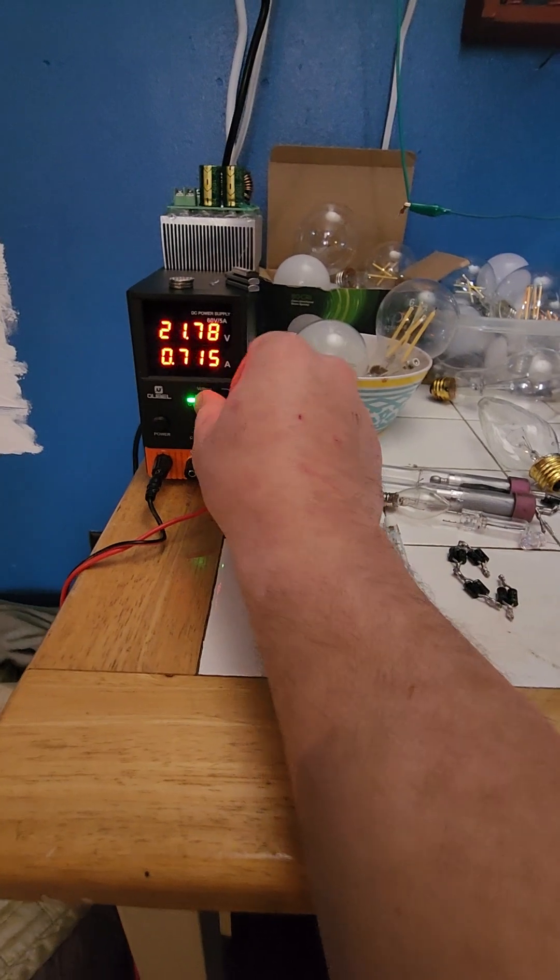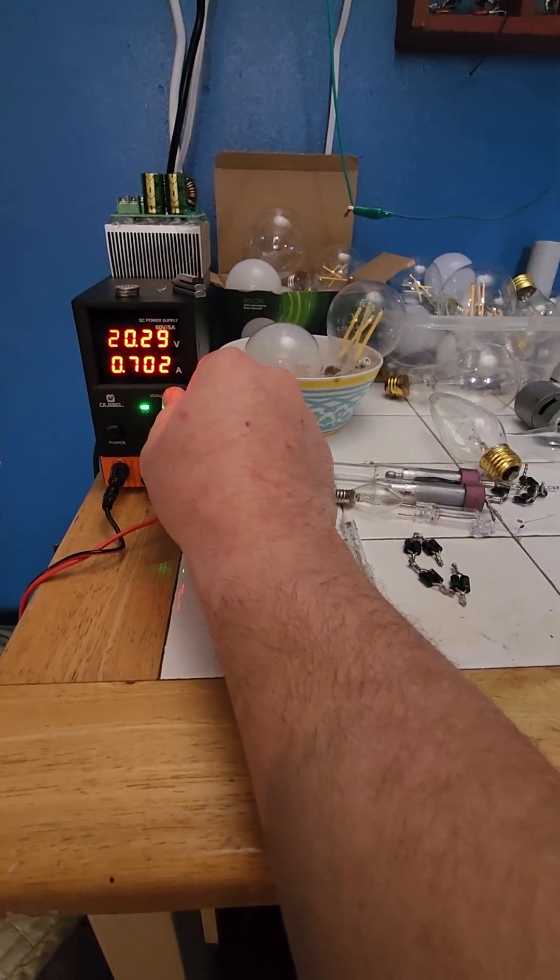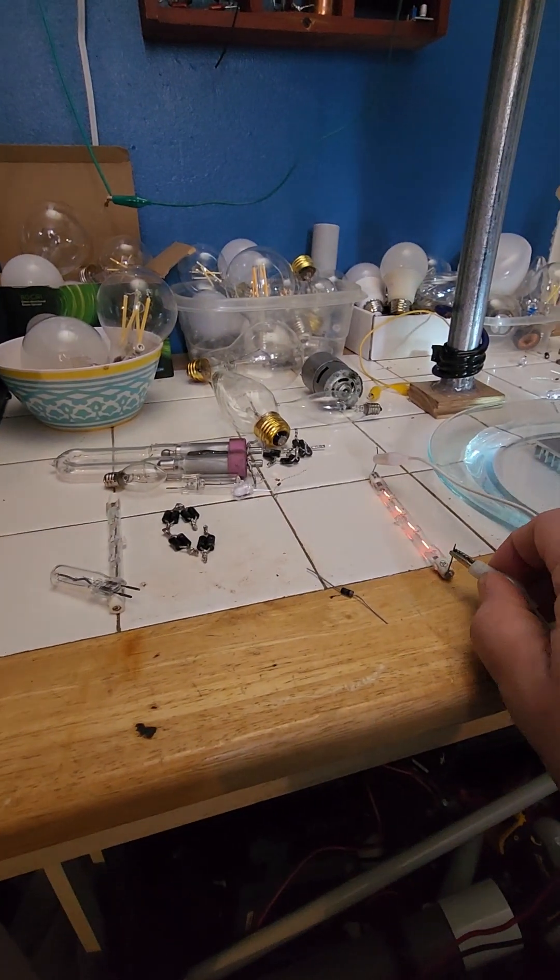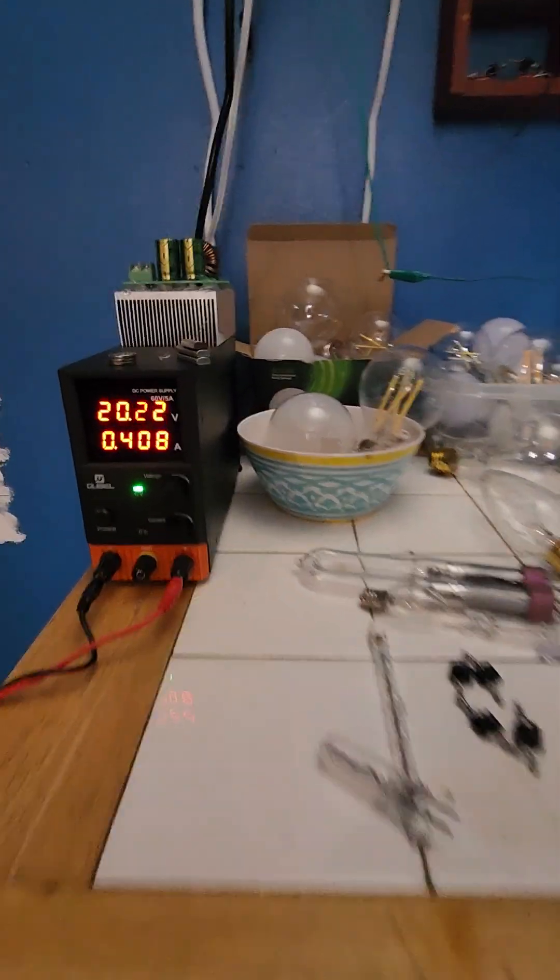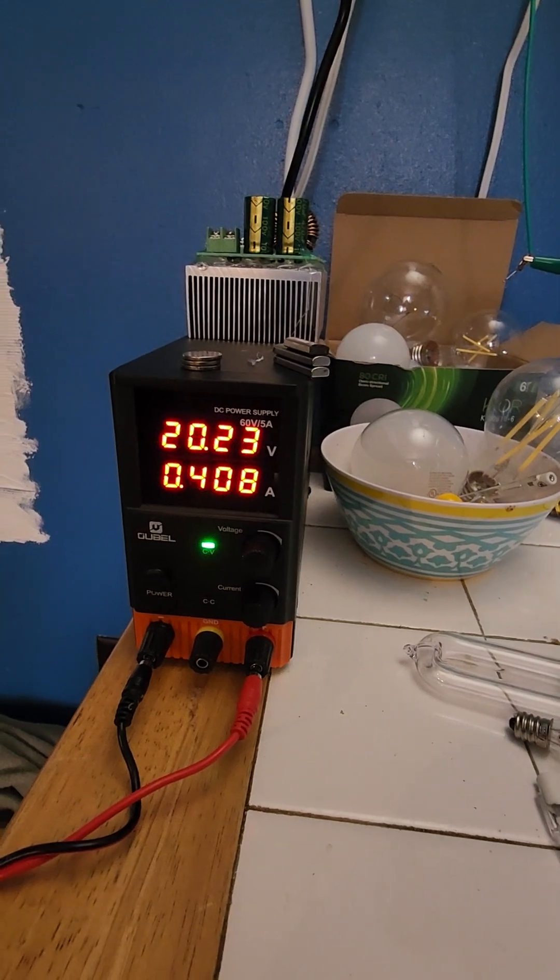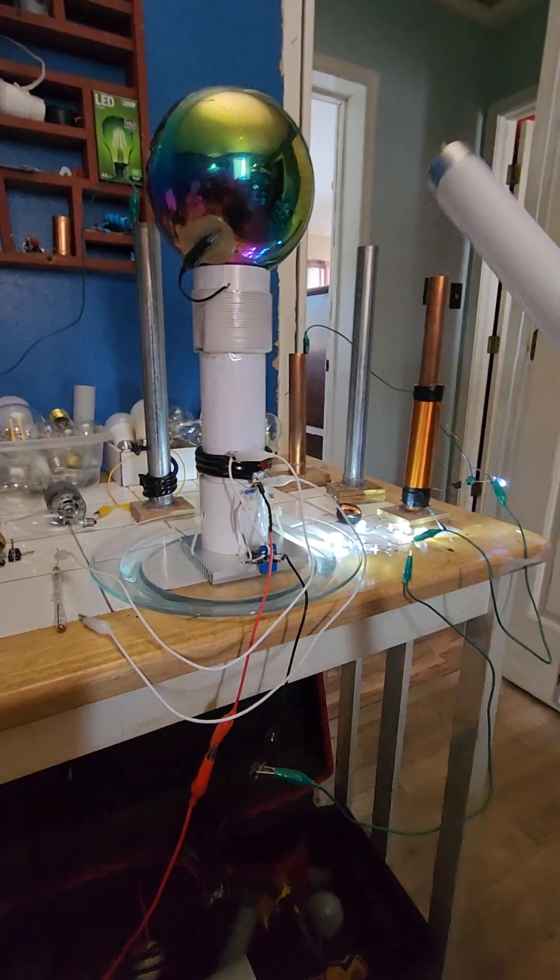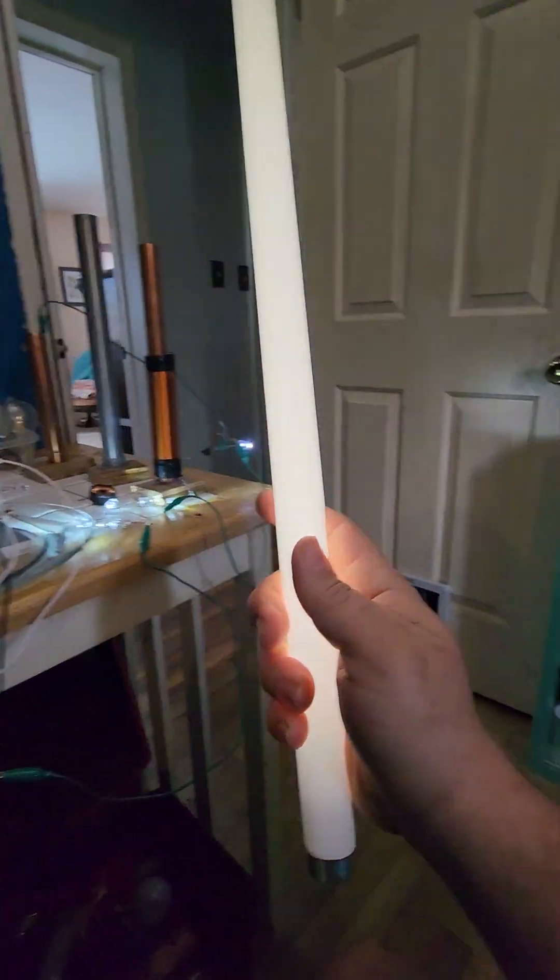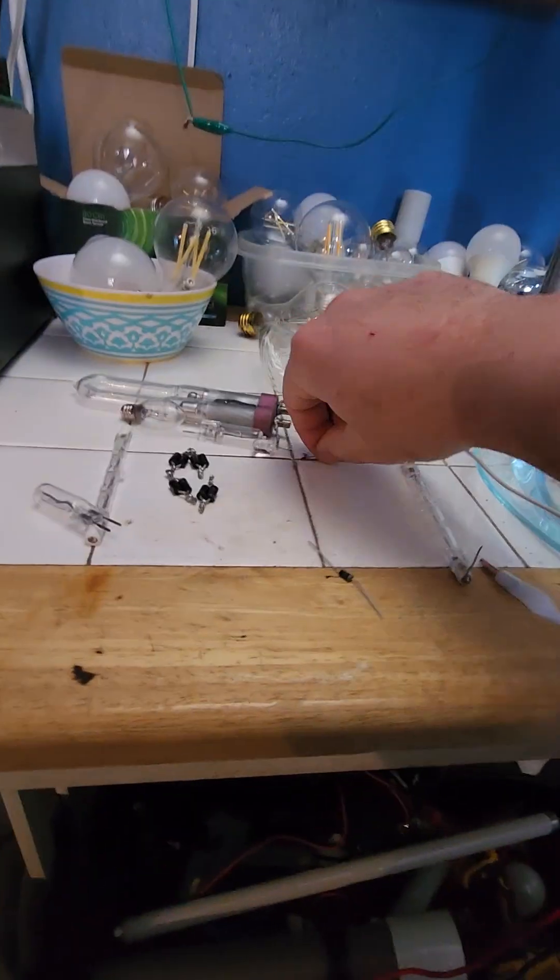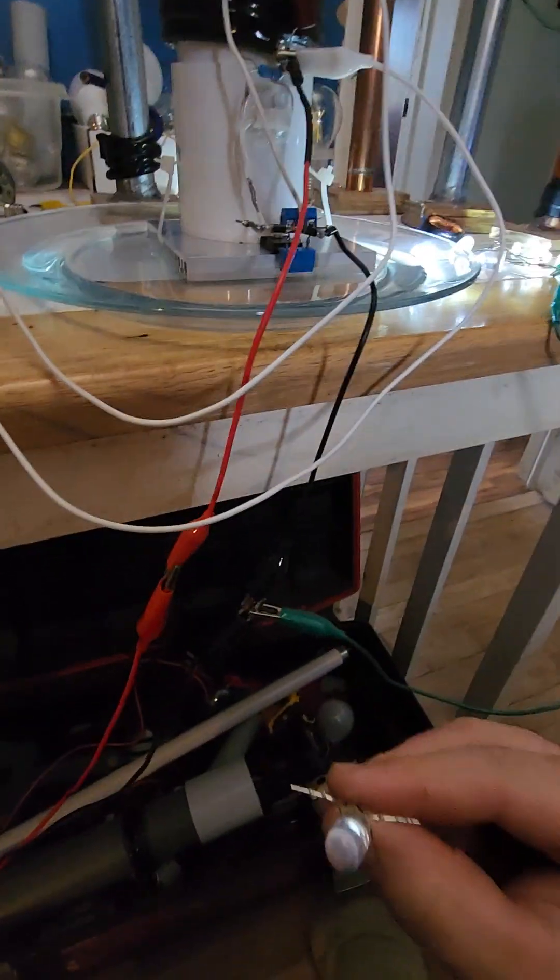It's much lower now. I'll disconnect the halogen and just show you how efficient the circuit is on wireless power. Without the halogen running we're consuming 20 volts under half an amp. We still have impressive wireless power, range is still pretty damn good.